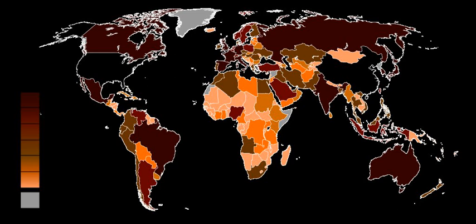The U.S. National Income and Expenditure Accounts divide incomes into five categories: wages, salaries, and supplementary labor income; corporate profits; interest and miscellaneous investment income; farmers' incomes; and income from non-farm unincorporated businesses. These five income components sum to net domestic income at factor cost. Two adjustments must be made to get GDP: indirect taxes minus subsidies are added to get from factor cost to market prices, and depreciation or capital consumption allowance is added to get from net domestic product to gross domestic product.